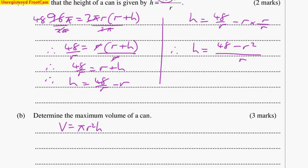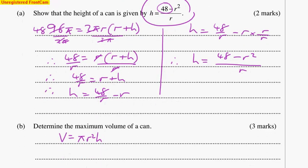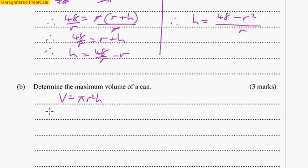Instead of h, we use what was given in the first equation. Notice they give it, so even if you couldn't actually work it out for yourself, you will still be given that first equation to use. So we substitute for h, the (48 - r²)/r. So therefore, V = πr² × (48 - r²)/r.